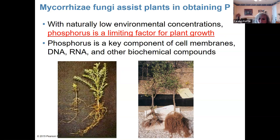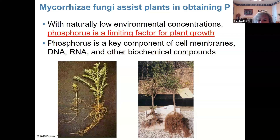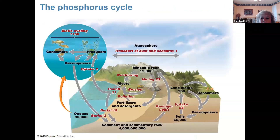Here are some woody plants — quite a bit older. One had mycorrhizae in the soil and one did not. You can see how many more roots the one with mycorrhizae has. Why do you care about phosphorus? Phosphorus is a super important nutrient for all of your cell membranes. It's also in your DNA and RNA and lots of other biochemical compounds. Those who've had biology before may have heard about ATP — the energy carrier molecule most animals use — and the P in ATP is phosphorus. You have to have phosphorus to be alive.